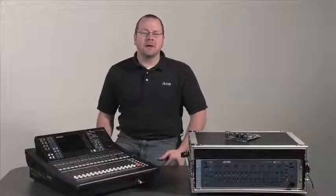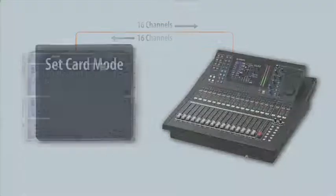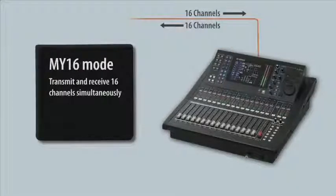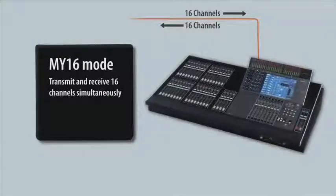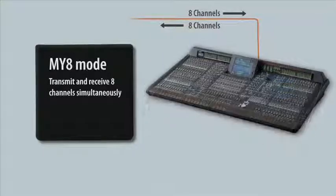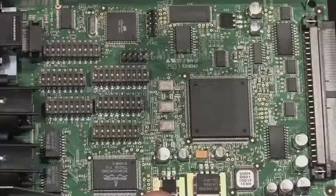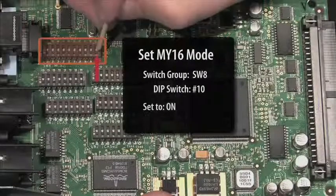For this example, we'll be configuring the card to transmit and receive 16 channels between the Pro 64 network and the LS9 console. The first step is to set the card's mode. The standard MY card slot for a Yamaha console allows you to transmit and receive 16 channels simultaneously in MY16 mode. MY8 mode reduces the channel count to 8x8 for compatibility with a PM1D or to use the card at 96k. To set the card to MY16 mode, flip dip switch number 10 into the on position.